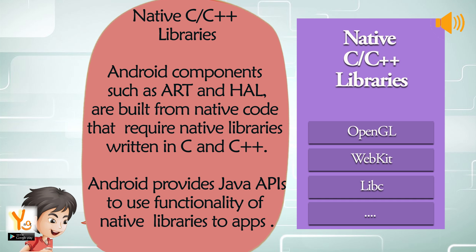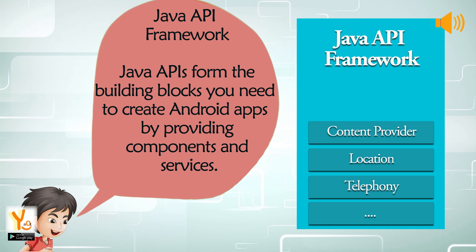Native C or C++ libraries: Android components such as ART and HAL are built from native code that requires native libraries written in C and C++. Android provides Java APIs to use the functionality of native libraries to apps. Java APIs form the building blocks you need to create Android apps by providing components and services.